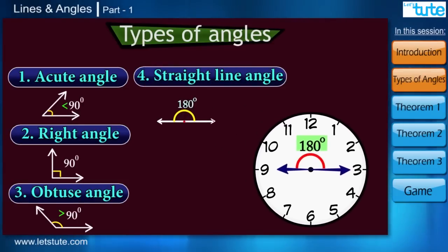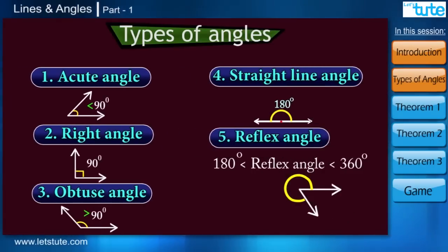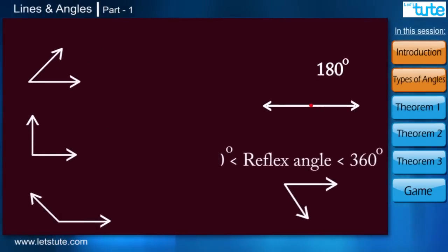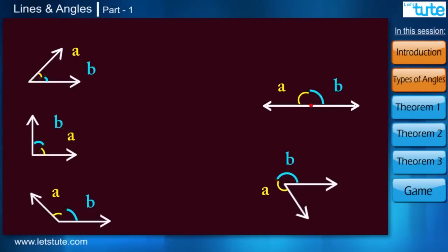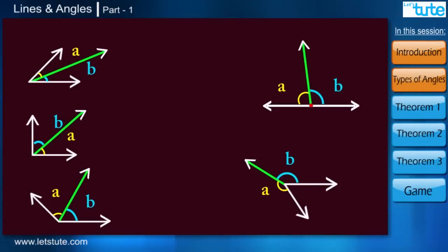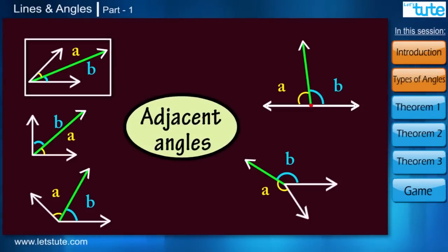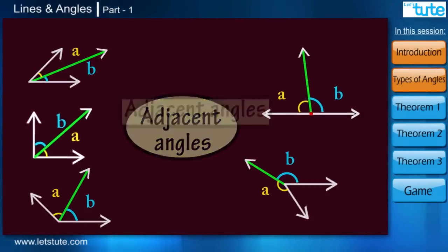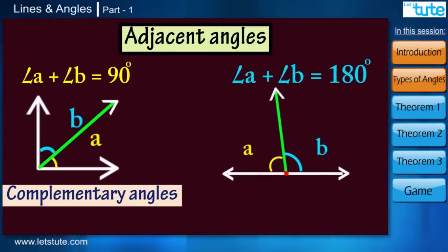Ever wondered how to form an angle which is greater than 180 degrees and less than 360? Well, it is simple — these angles are called reflex angles. Till now we were talking about only one angle. But when I draw one ray somewhere between the angle, we now have two angles which have one ray in common. Such kinds of angles are called adjacent angles. These adjacent angles can be of various types and different measures. But when the addition of adjacent angles is 90 degrees, they are called complementary angles, and if their addition is 180 degrees, then they are known as supplementary angles.